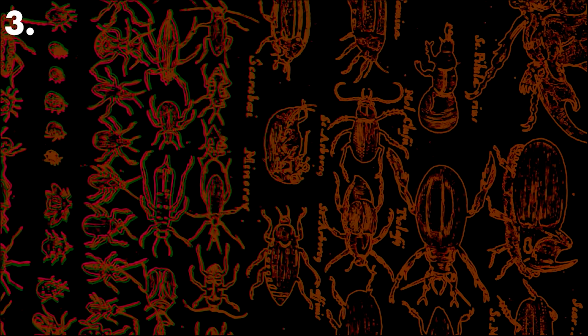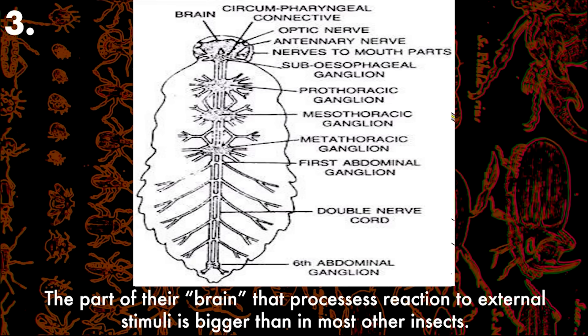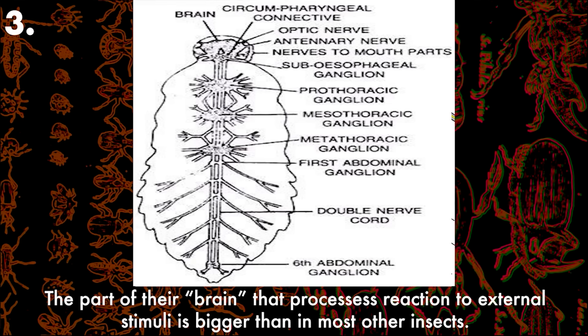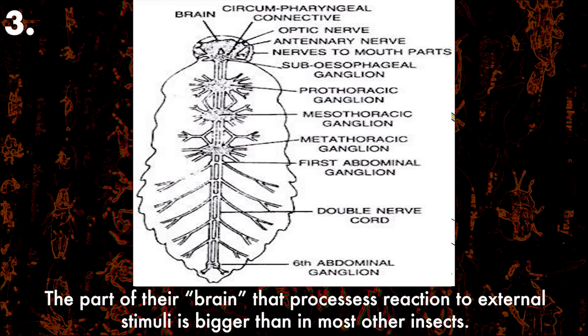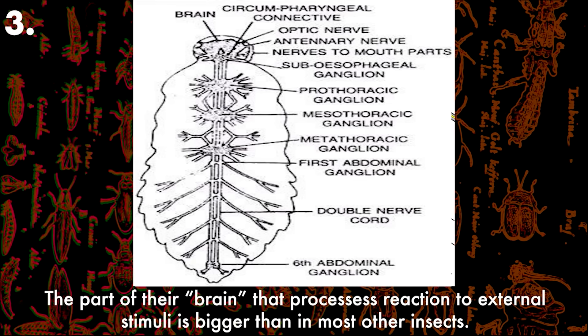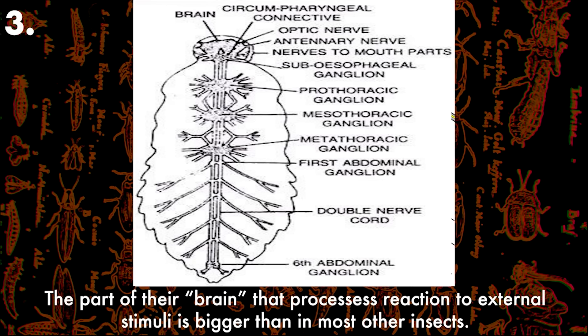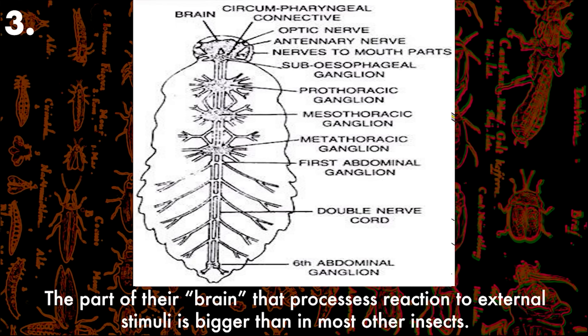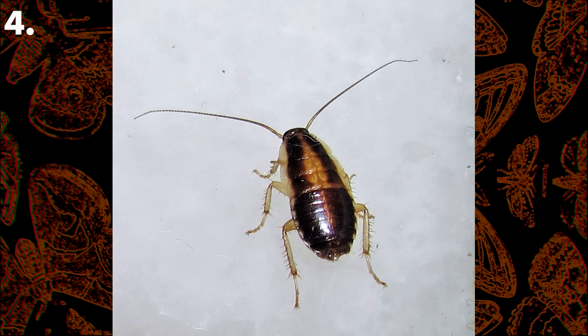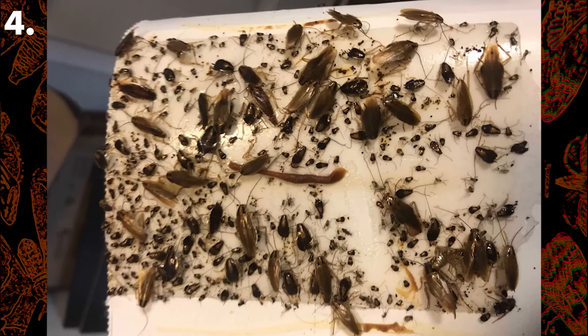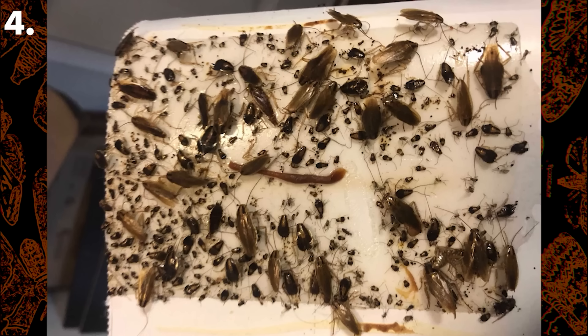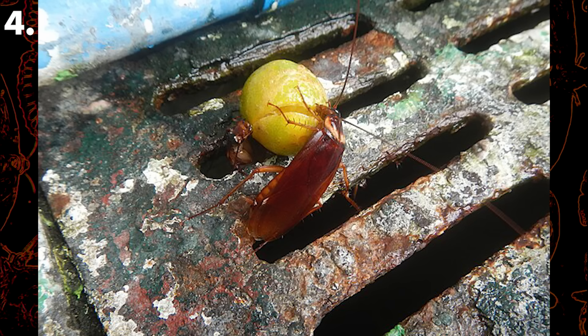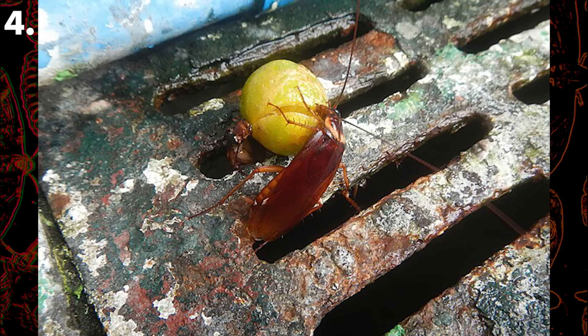Third, they have fast reflexes and high speed. Their giant interneurons enable rapid escape responses — their large nerves allow them to react extremely quickly to vibrations and other stimuli, even more so than other insects. Fourth, rapid reproduction: species like the German cockroach, Blattella germanica, breed rapidly, ensuring high population survival. This often coincides with food availability, allowing them to capitalize on a good situation.